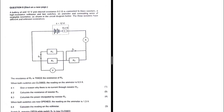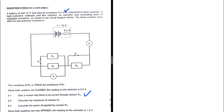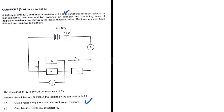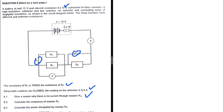Give a reason why there is no current through resistor Rz. The question states: a battery of EMF 12 volts and an internal resistance of 0.2 ohms is connected to three resistors, a high-resistance voltmeter, two switches, an ammeter, and connecting wires of negligible resistance. The three resistors have different and unknown resistances. The resistance of Ry is twice that of Rx. When both switches are closed, the reading on the ammeter is 5.5 amperes.